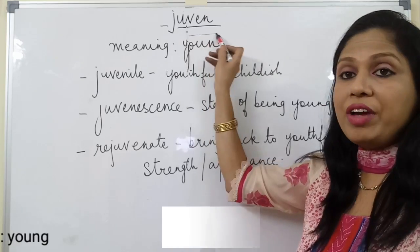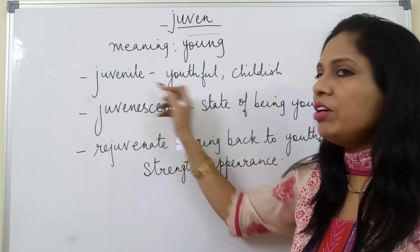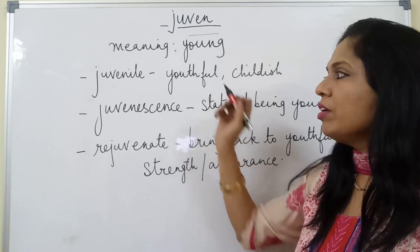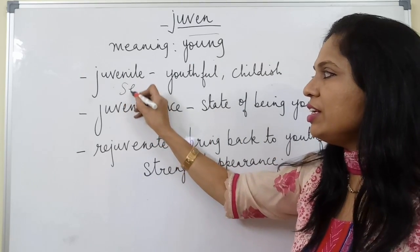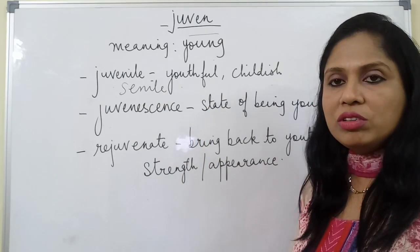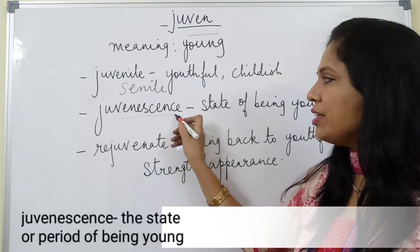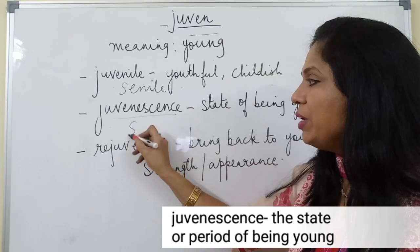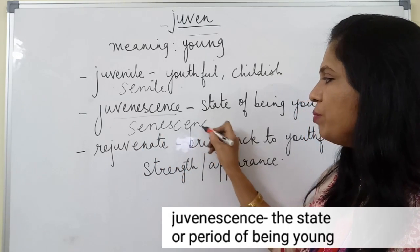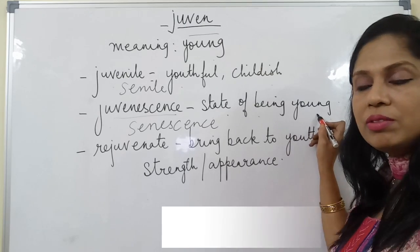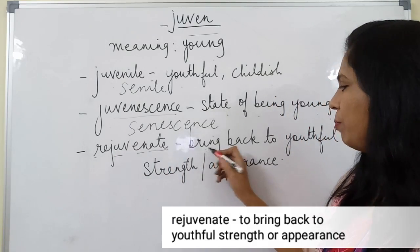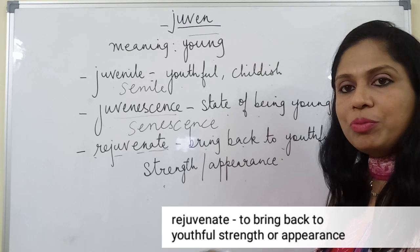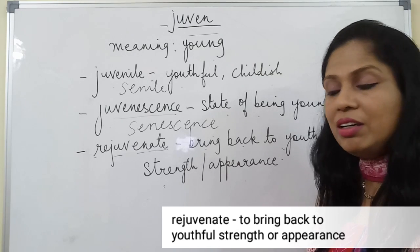The root word 'juven' means young. A juvenile is a youthful or childish person; the antonym of this word is senile, which means old. Juvenescence means the state of being young; the antonym is senescence, which means the state of being old. Rejuvenate means to bring back youthful strength or appearance — to become or make something young again.